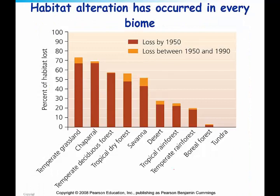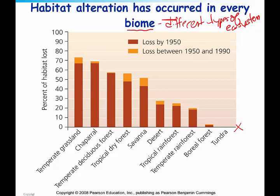Habitat alteration or removal hasn't just happened in Indonesia — it's happened in almost every biome in the world. A biome refers to different types of ecosystems. On the graph, the x-axis lists all the biomes in the world, and the y-axis shows the percent of habitat lost. The maroon color shows the loss since the 1950s, and the orange shows the loss between 1915 and 1990. The biome that has had the biggest habitat loss is the temperate grasslands. Every single biome has suffered loss of habitat, perhaps except for the tundra, which is essentially permanently frozen ground. It is expected that with the thawing of the tundra due to climate change, we will start to see habitat loss as humans start to move up there and make use of the land.